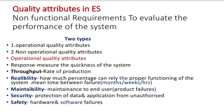In operational quality attributes we have six types. First, response — used to measure the quickness of the system. Next, throughput — used to identify the rate of production. Reliability depends on how much percentage we can rely on the proper functioning of the system, measured by mean time between failure in months, weeks, or hours.